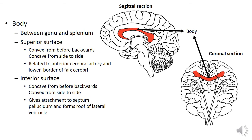Coming to the body — this region here is the body of corpus callosum. The region between the genu, which forms the anterior end, and the splenium, which forms the posterior end, is the body. It has a superior surface and inferior surface. The superior surface is convex from before backwards — as you can see in this sagittal section.